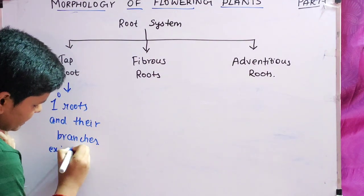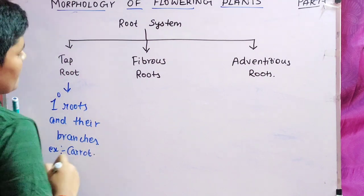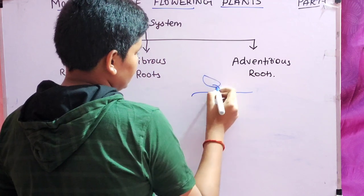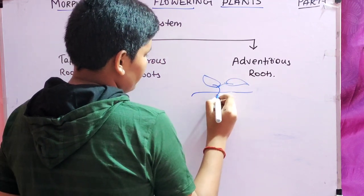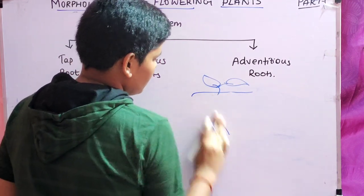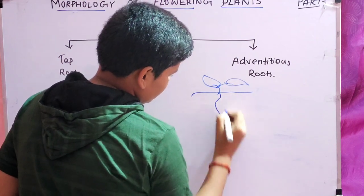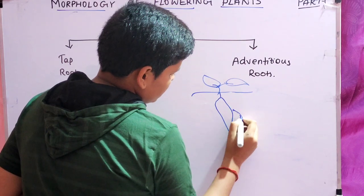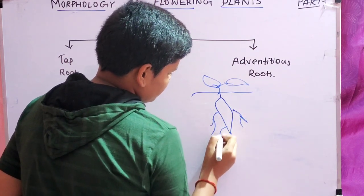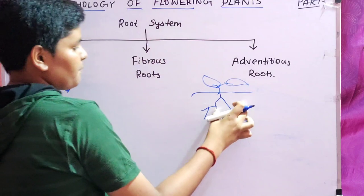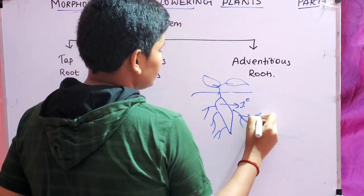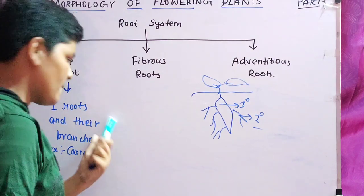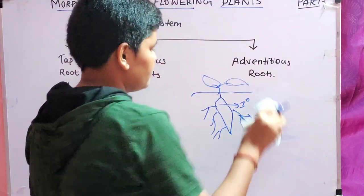An example is carrot. This is the tap root system — the primary root and the secondary roots or branches form the tap root system. Tap root system is very basic.